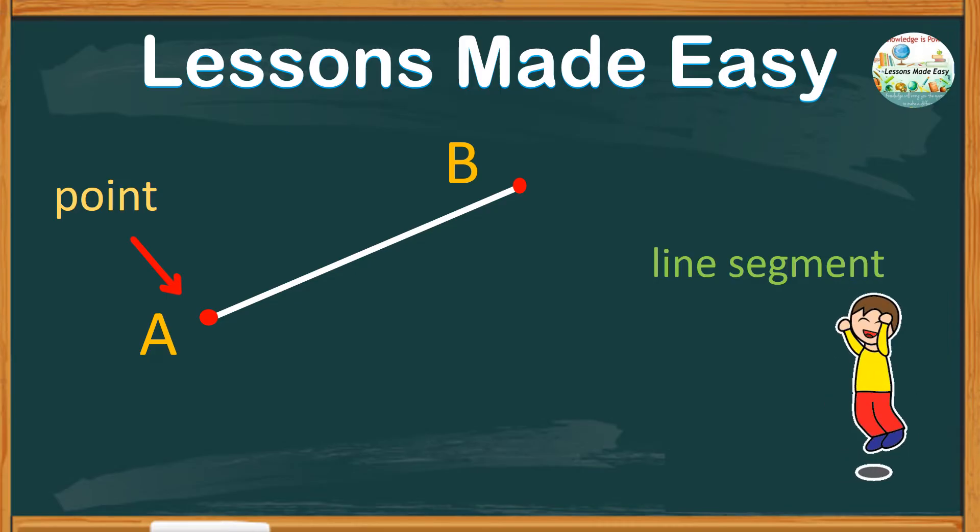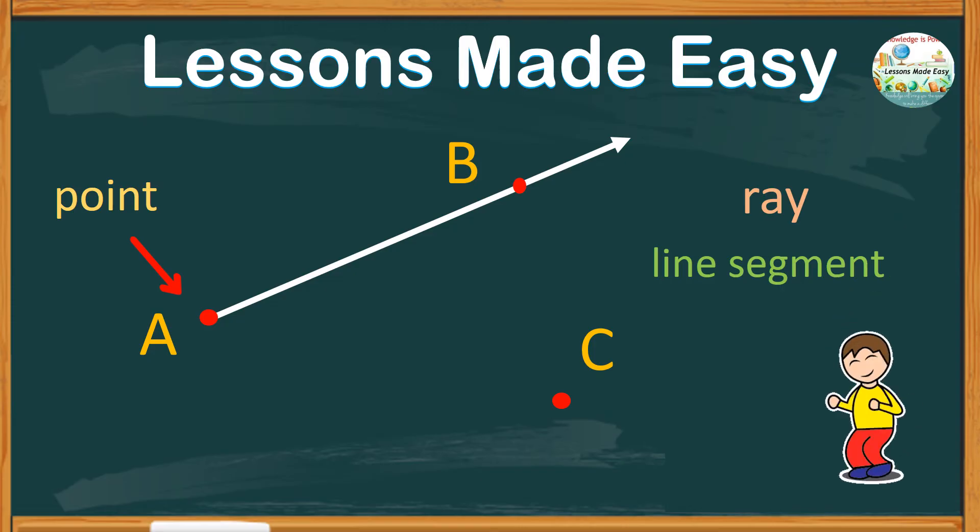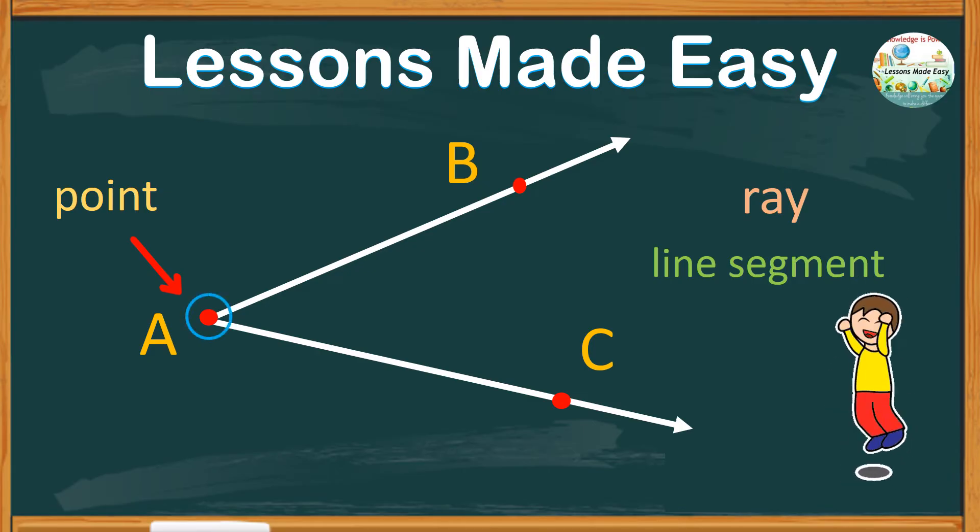Now, if we extend one of these endpoints, we can go either way. Suppose we will extend from point B. Now, we no longer have a line segment, but instead, we call it a ray. Let's have another point, and name this point C. Notice that these two rays meet at the same point, where a corner is formed, and this corner is called an angle.